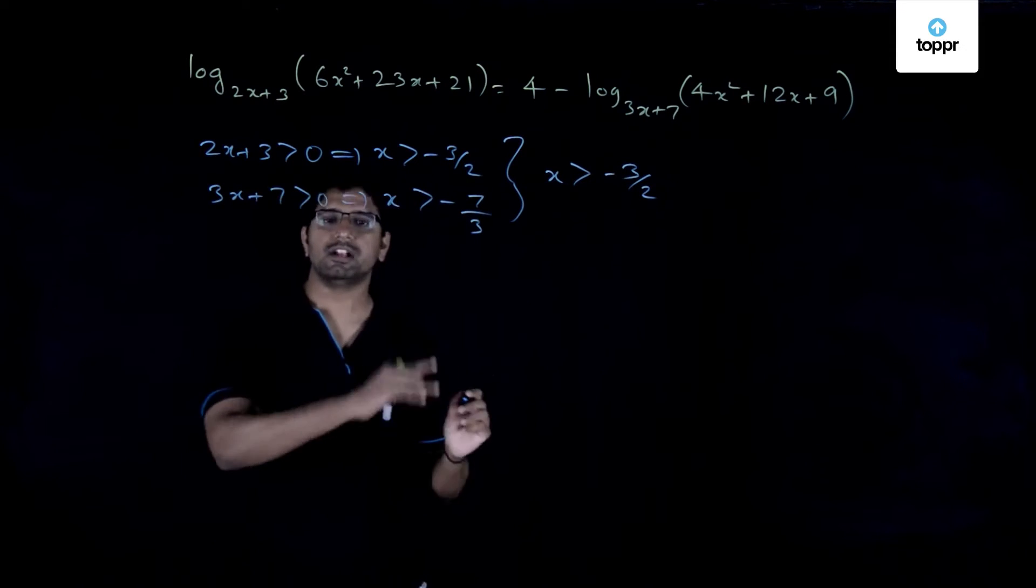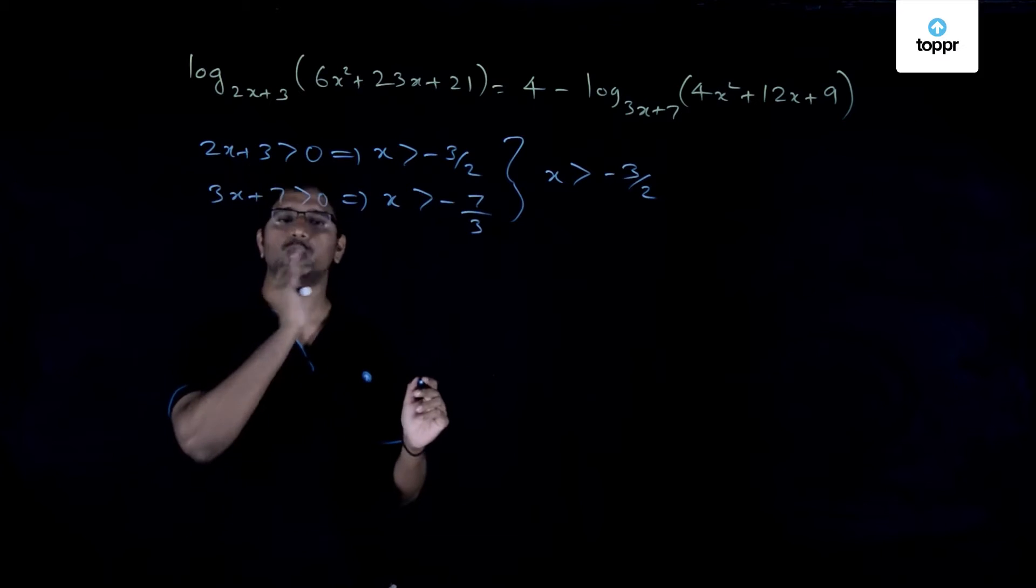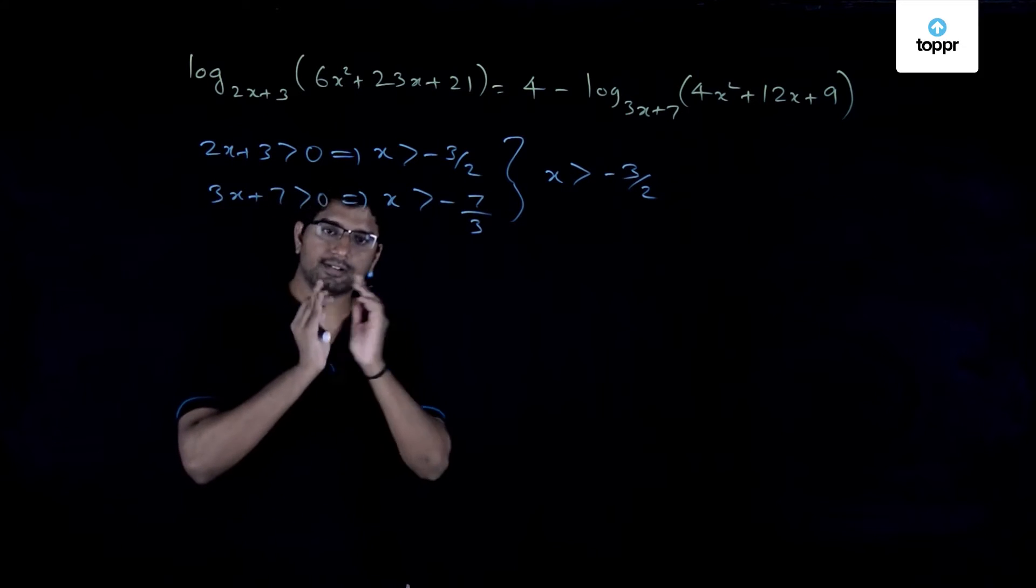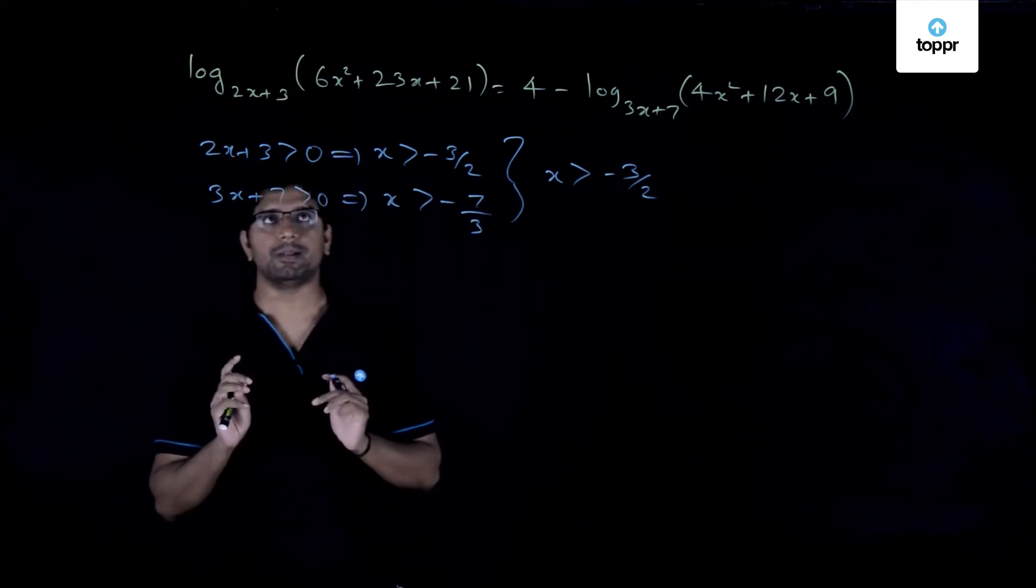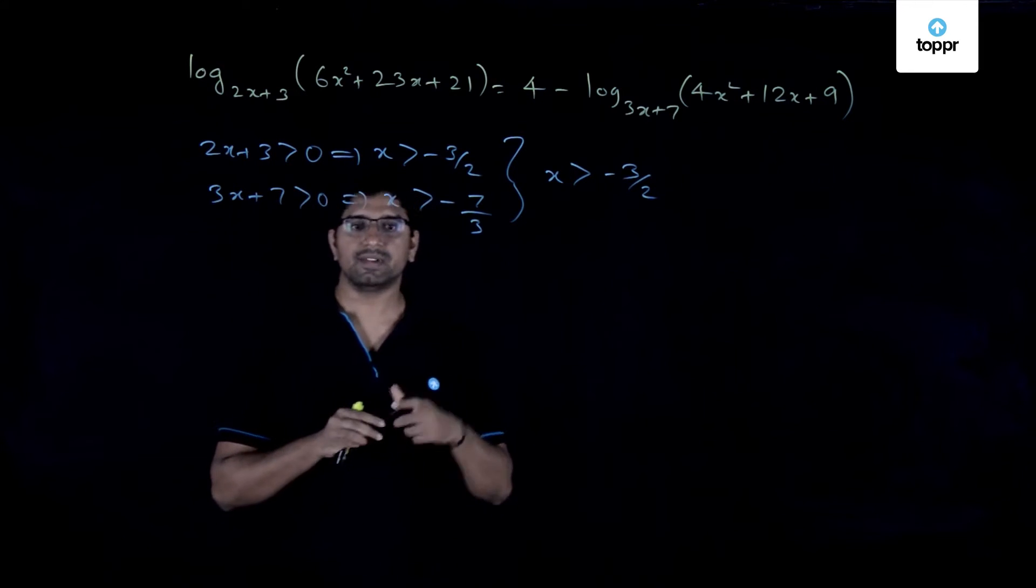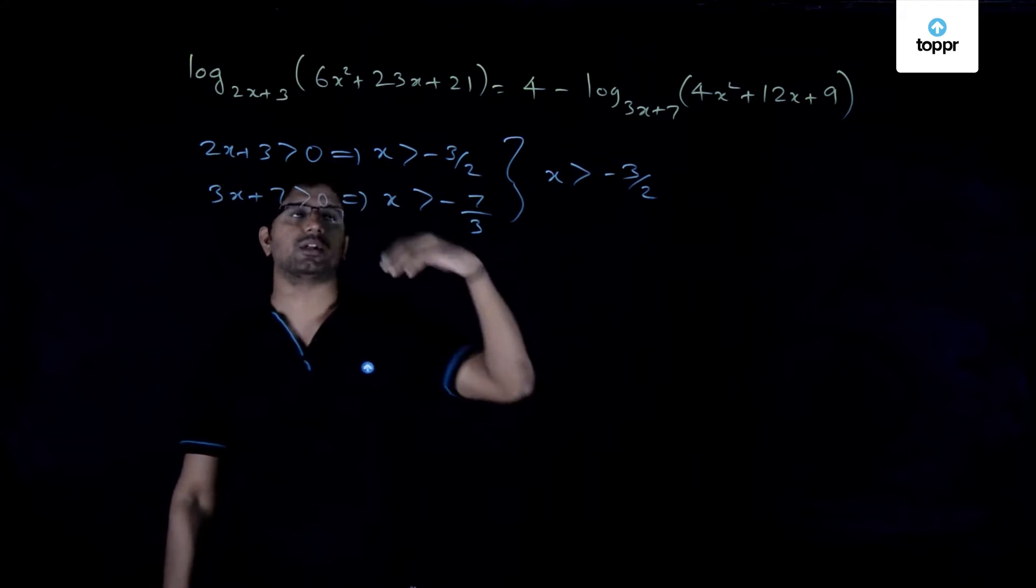Further, you can very well plug in the condition that both of these should not be equal to 1, and therefore those 2 values are also discarded. So that is the first part of the problem. Once you are done with this, then we can proceed and see how to solve this further.